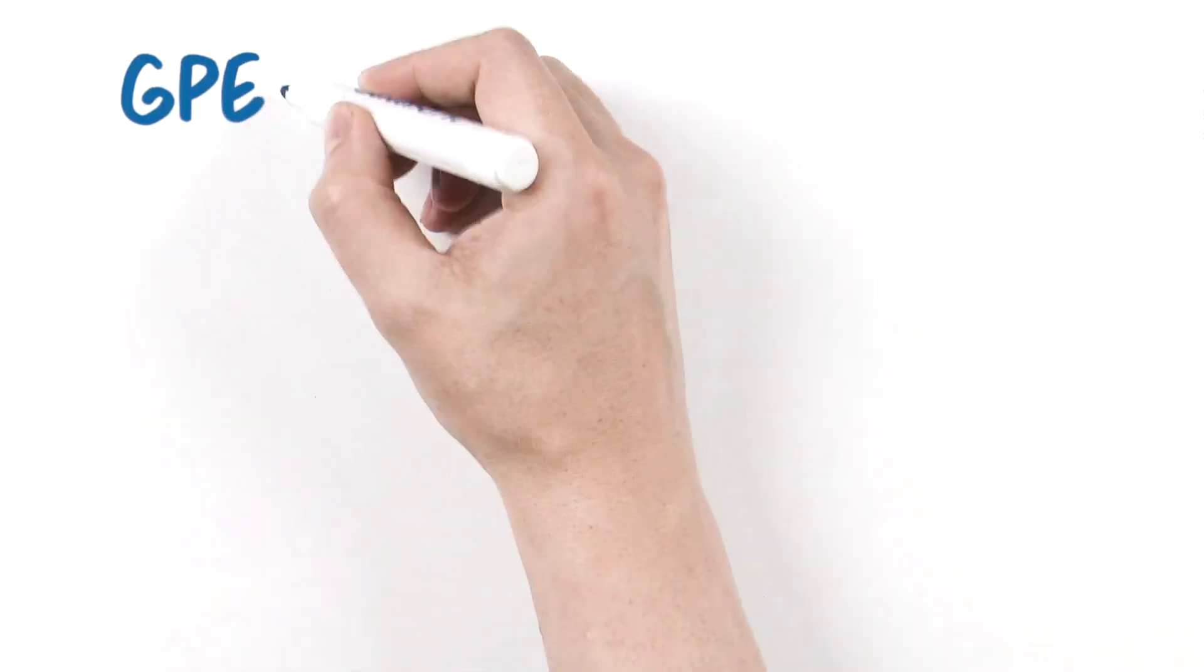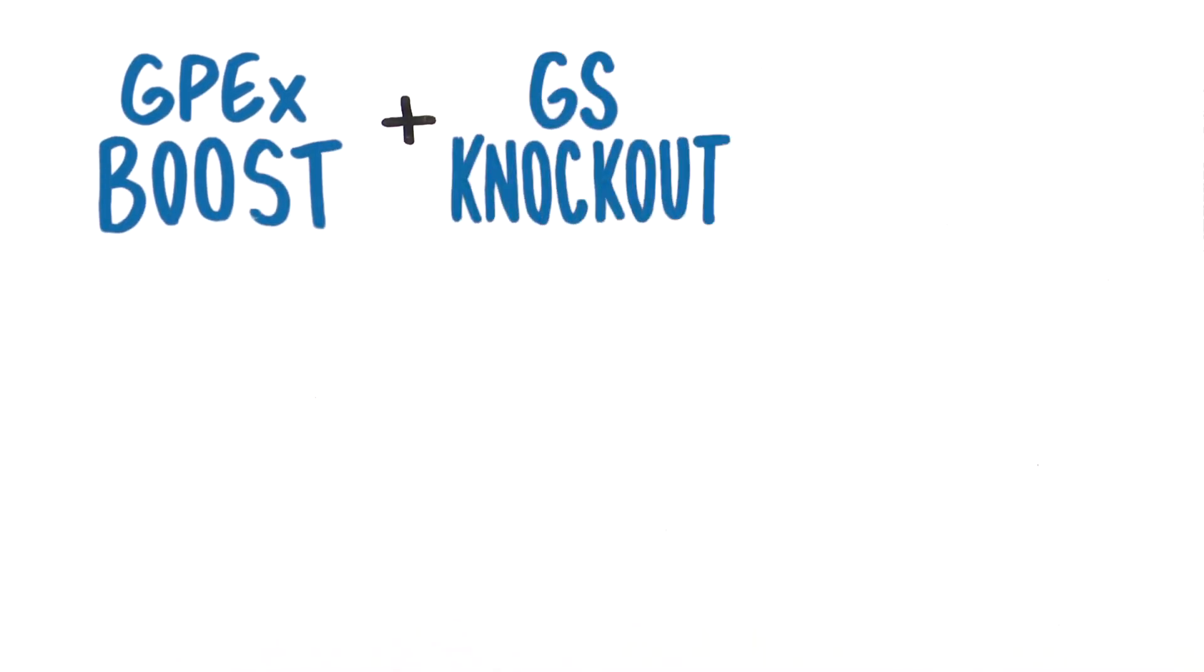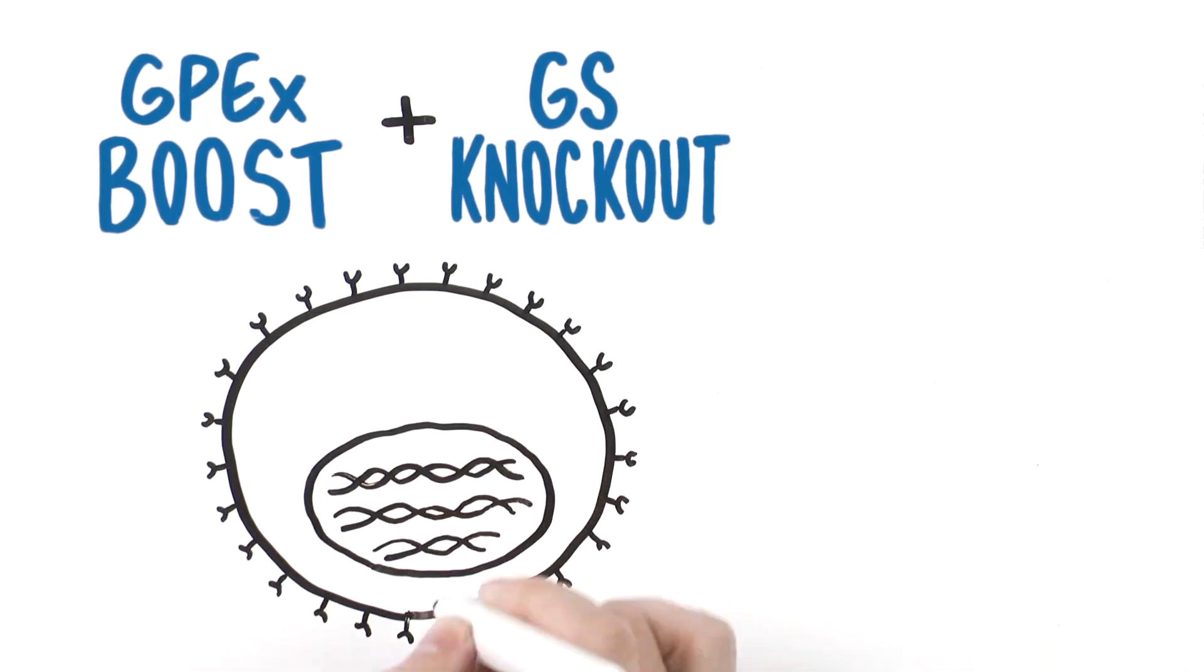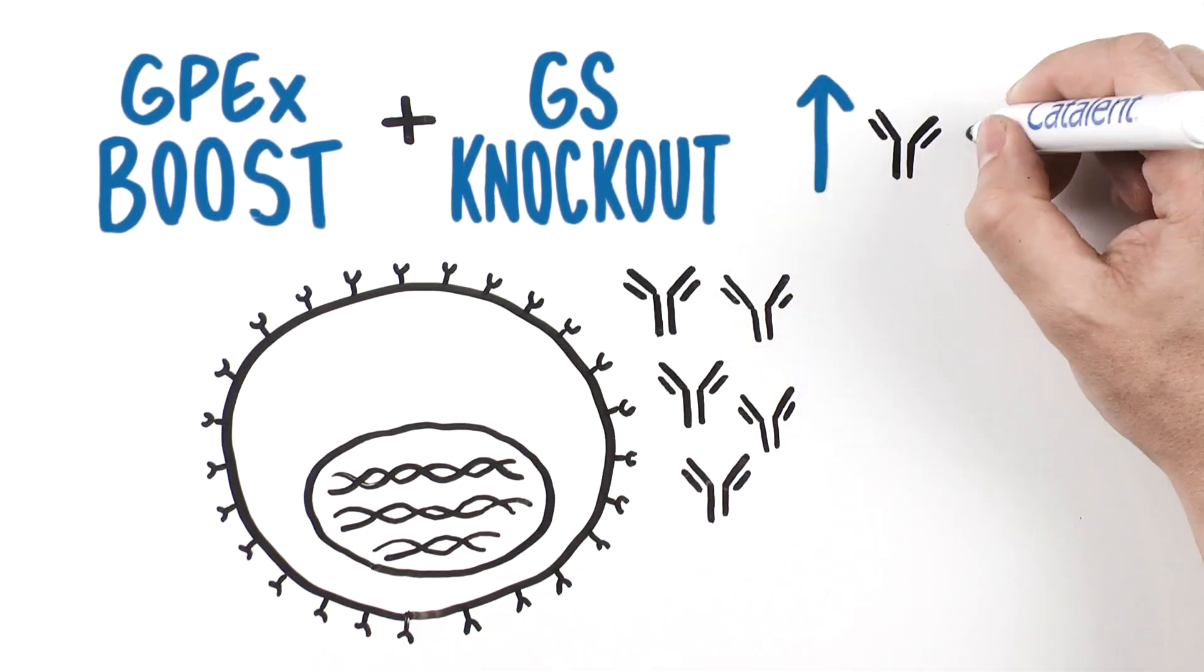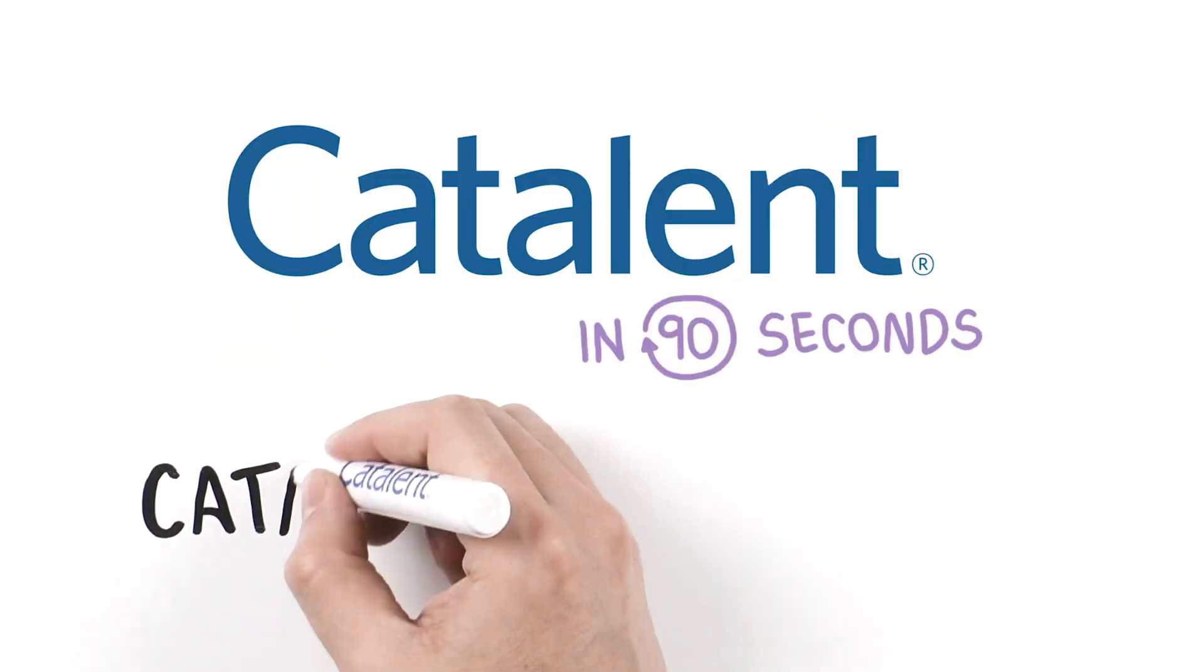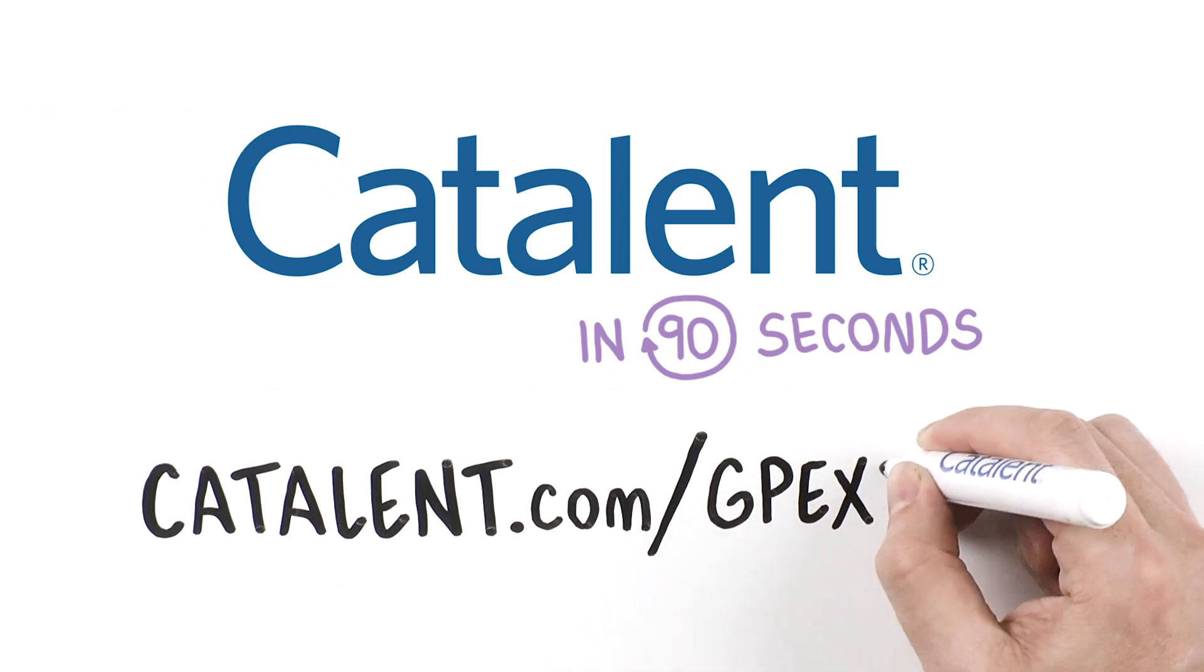The combination of GPEX and GS knockout has a synergistic effect, resulting in a robust and very consistent cell line development platform that improves the efficiency of biomanufacturing. Katalint.com slash GPEX Boost.